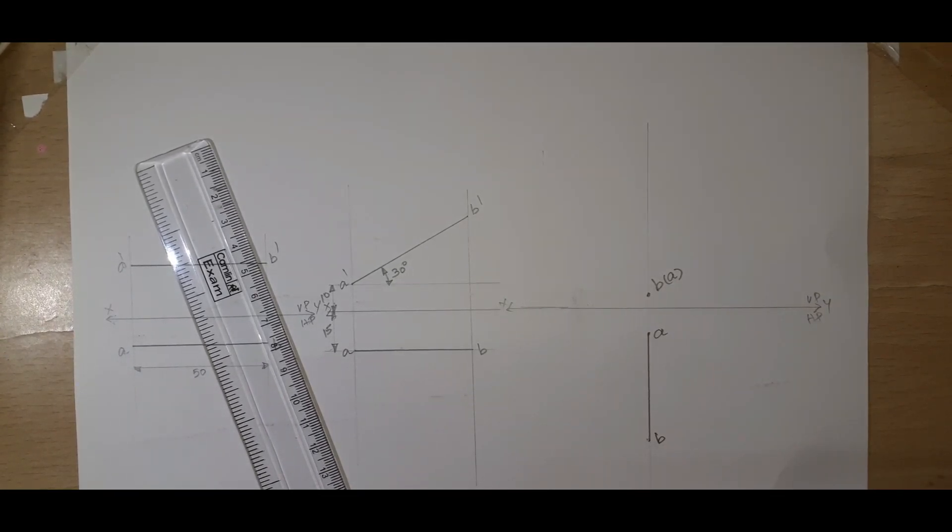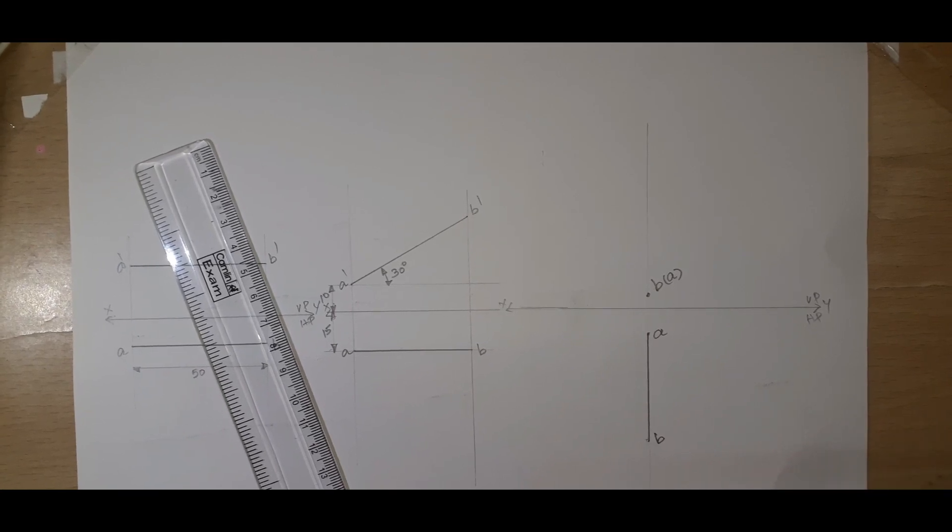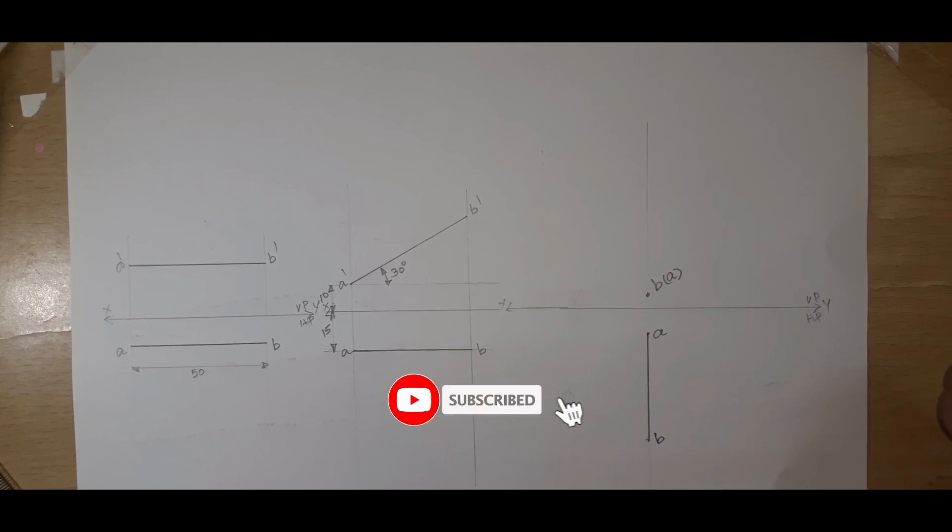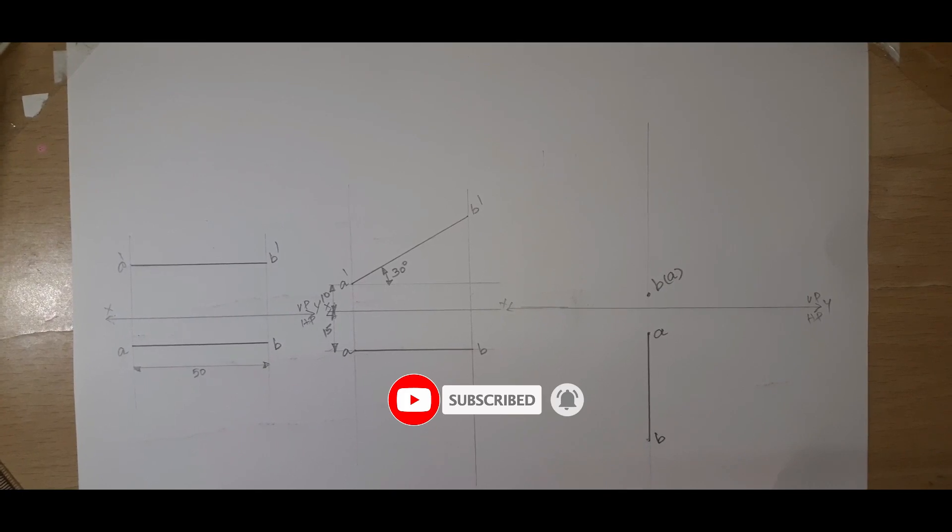So I told this is very important. These are all the basic problems. After understanding all these basic problems only, we can go to the next topic. That is the main one: projection of lines inclined to both the planes by rotating line method. What is rotating line method? We can see in the next video.